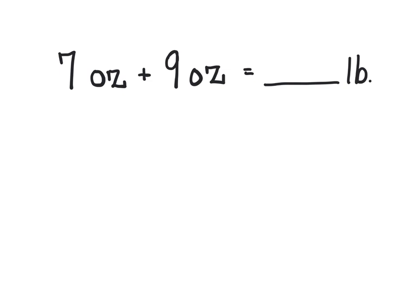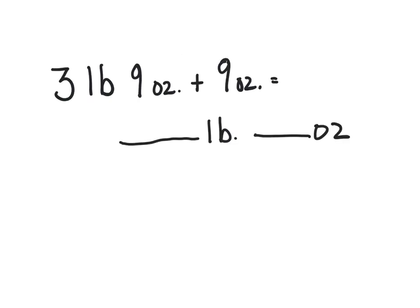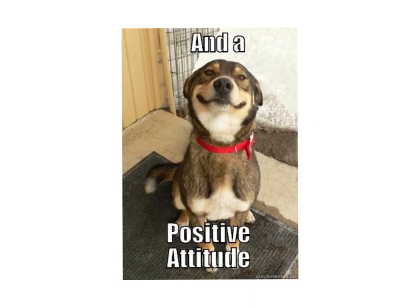Take that positive attitude and let's see how you can do on the next few problems. 7 ounces plus 9 ounces equals how many pounds? 1 pound take away 13 ounces is equal to how many ounces? 3 pounds 9 ounces plus 9 ounces gives us a mixed measurement of how many pounds and how many ounces. Oh, isn't he cute? Giving you a big smile. And a positive attitude gives you what this little boy is giving you. The biggest smile and happy. So, guys, good job. You should all be happy. Giving it your best effort and those shining positive attitudes. Have a wonderful night, guys.